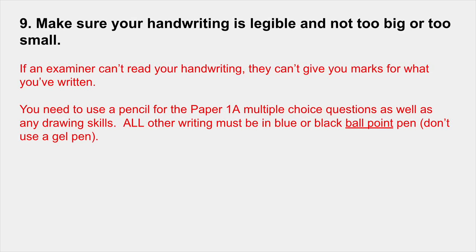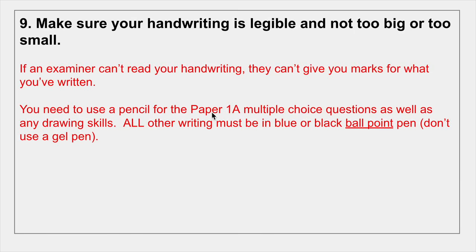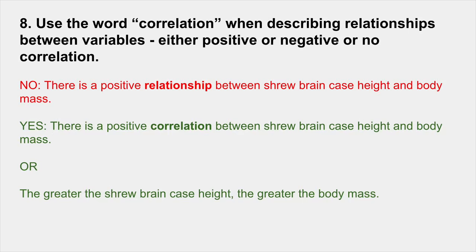Number 9: make sure your handwriting is legible — not too big, not too small. If an examiner can't read your handwriting, they can't give you marks. Please make sure they can read what you have to say. Also, use a pencil for Paper 1A multiple choice and any drawing skills on Paper 1B or Paper 2. All other writing must be in blue or black ballpoint pen — don't use a gel pen, as it can bleed through and cause scanning issues.